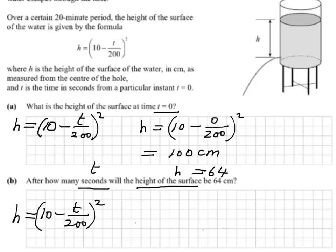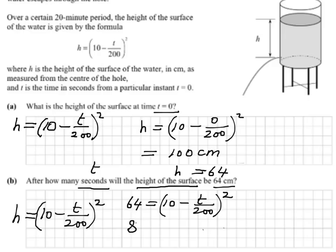This time it's the other way around — last part we had t and were looking for h; now we have h equals 64 and we're looking for t. Substituting: 64 equals 10 minus t over 200, all squared. Taking the square root of both sides, square root of 64 is 8 — strictly speaking plus or minus 8, but we're dealing with heights so we don't need the minus. So 8 equals 10 minus t over 200, giving t over 200 equals 2, therefore t equals 400.